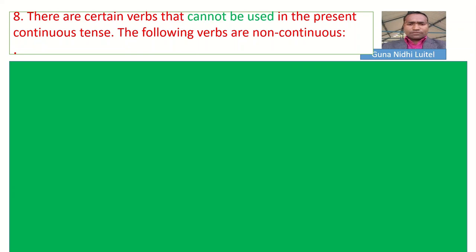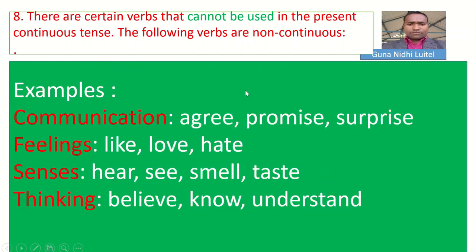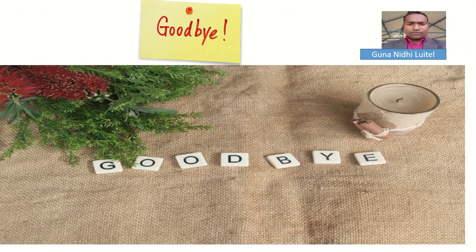Okay, there are certain verbs that cannot be used in present continuous tense. The following verbs are non-continuous. Some words used in communication, some words used for feeling like love, hate, and sense. Some words used for the senses: hear, see, smell, taste. Some words used for thinking: believe, know, understand. We cannot make the -ing form of them — like loving, hating, hearing, seeing, understanding, believing, knowing. So they are generally used in simple present tense, not in any continuous tense. Thank you students.